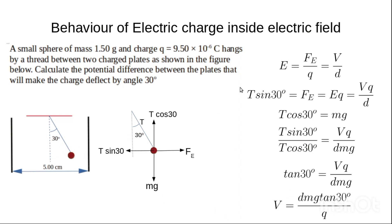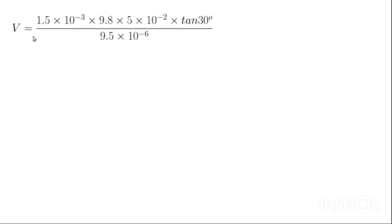If we substitute all these values into this equation, remember when you are substituting, the d which is in centimeters must be converted to meters, and the mass must be converted to kilograms. We have V = (1.5 × 10^-3 × 9.8 × 5 × 10^-2 × tan 30) / (9.5 × 10^-6). If you use your calculator to solve this particular problem, you'll get V = 74.45 volts. That's the potential difference between the two plates.